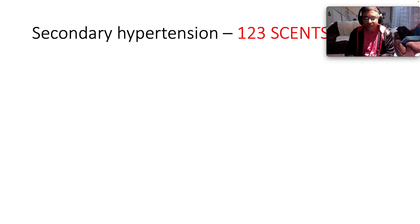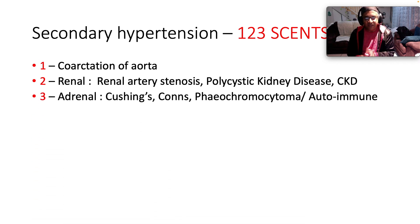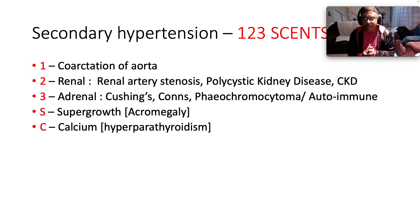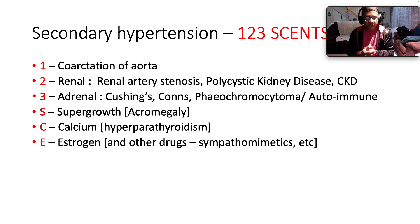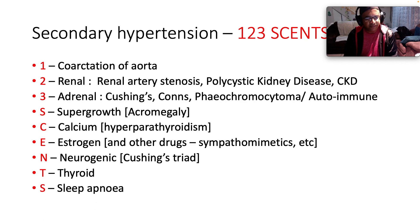An easy way to remember this is the mnemonic: 1, 2, 3, 4 CENTS. One speaks to coarctation of the aorta. Two speaks to renal disease — be it renal artery stenosis, polycystic kidney disease, chronic kidney disease — all in the kidney. Three is adrenal, where we're speaking about Cushing's, Conn's, and phaeochromocytoma. A could also stand for autoimmune etiologies — we think about vasculitis. S is super growth, speaking to acromegaly. C is calcium, associated with hyperparathyroidism. E speaks to estrogen and other drugs. N is for neurogenic — alluded to in Cushing's triad. T is for thyroid and S is for sleep apnea.